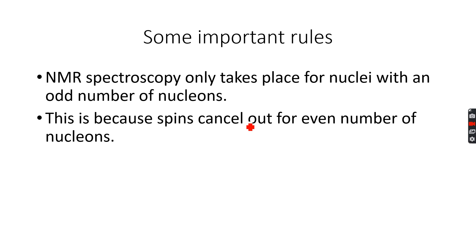If we have an odd number of nucleons, the spins will not cancel out. There will be a resultant spin, and due to that resultant spin, we will have a spectrum.